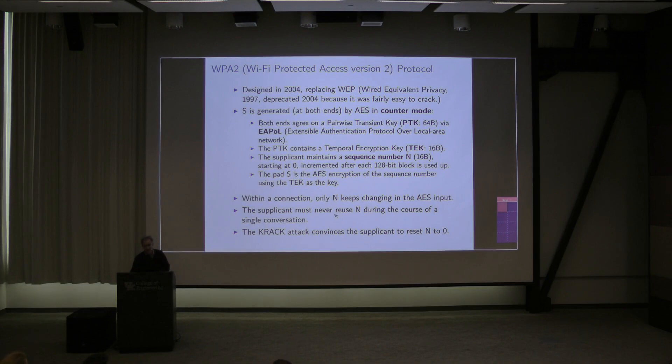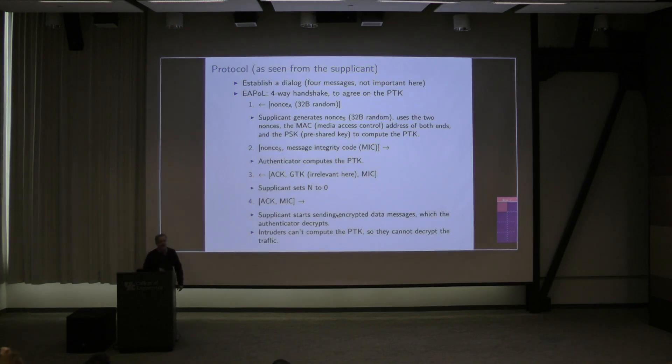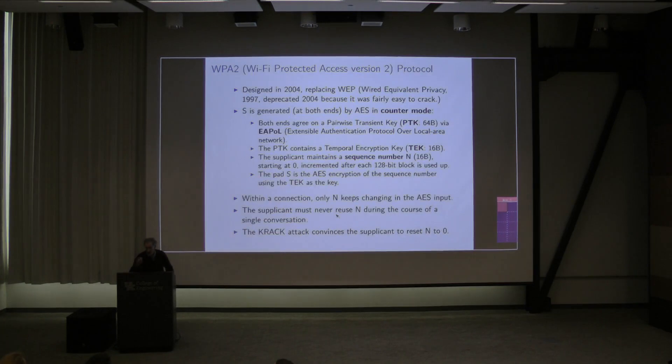The supplicant has a sequence number, which is 16 bytes long, which is enough to hold 2 to 128 numbers. You're never going to run out of that. It starts at zero. And the way you build this pad is by using that T-E-K, temporal encryption key. And you use it as the key for the AES encryption scheme. And you encrypt the next sequence number. This method is called counter-mode. As long as no one else knows what your key is, no one can figure out anything about this one-time pad.